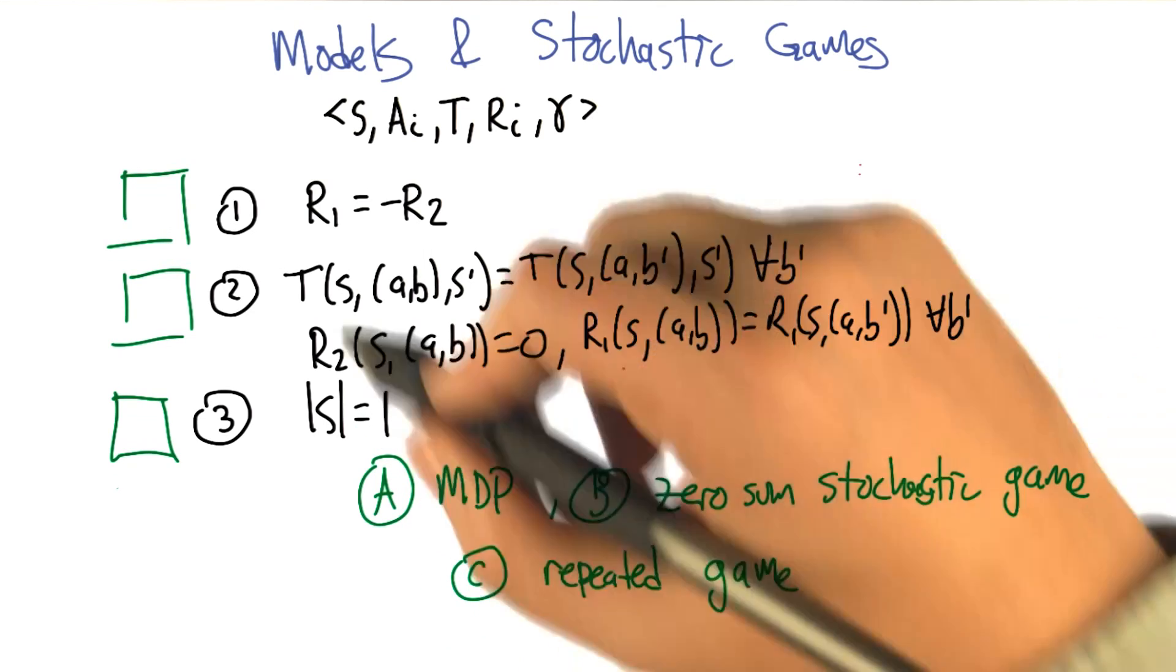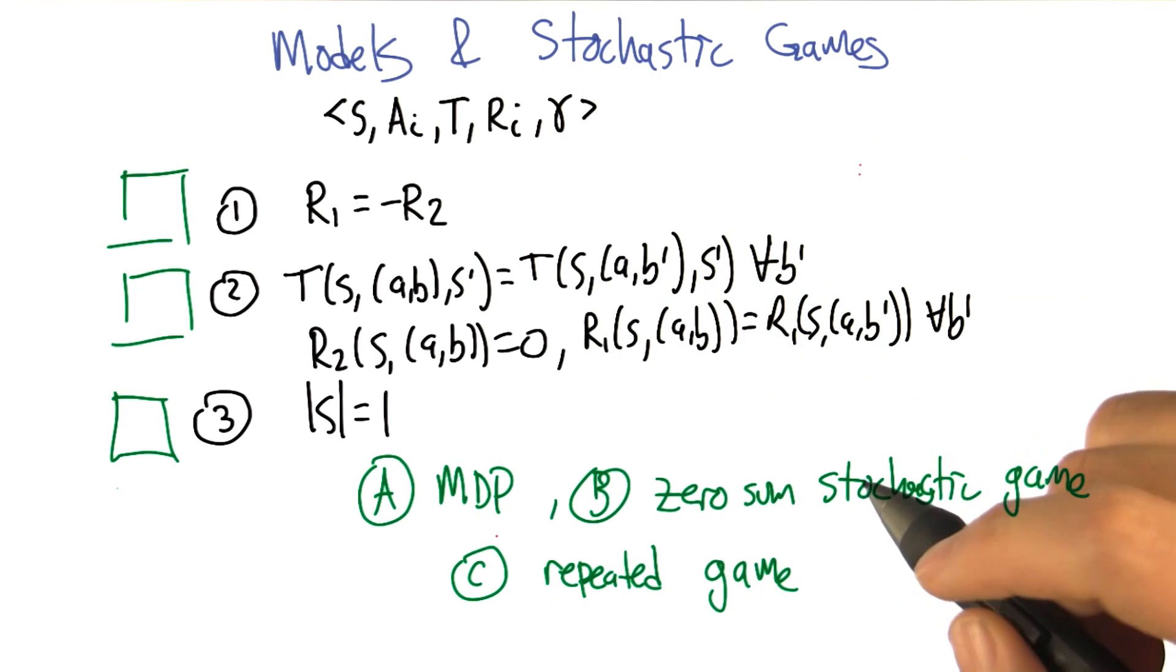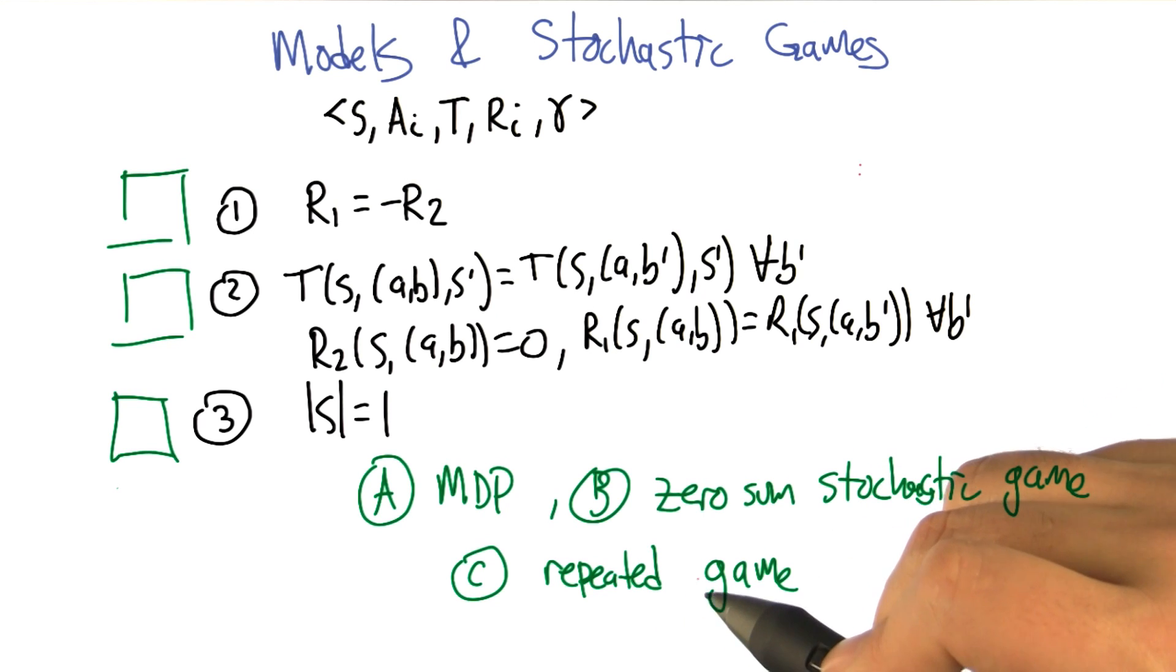So I claim that by doing these constraints, these restrictions, we get out the Markov decision process model, a zero sum stochastic game model, and the repeated game model that we've been talking about in the context of the folk theorem.